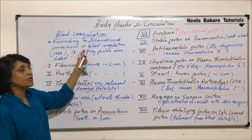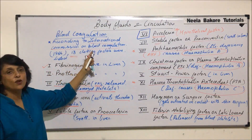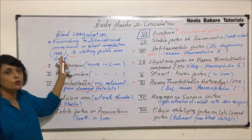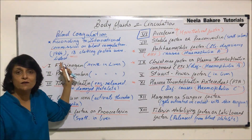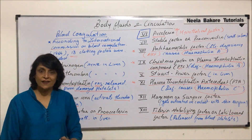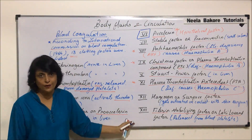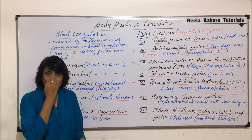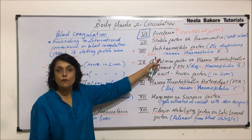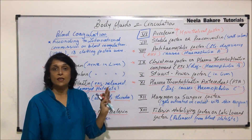According to the International Commission on Blood Coagulation, which published this list in 1954, 13 factors have been listed. So we must remember 13. One important thing about hemophilia: there are three types — Hemophilia A, B, and C.